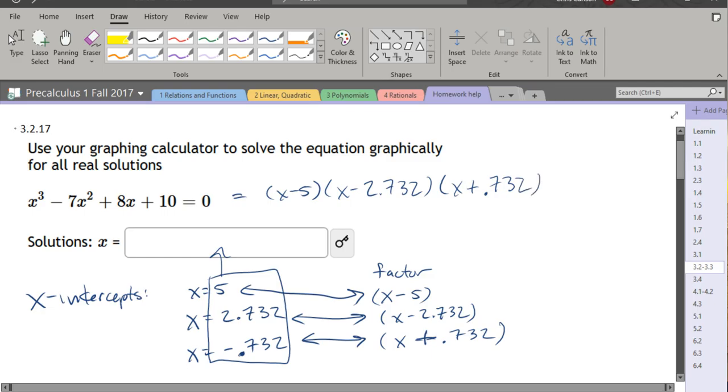So that would be factored form. There's a one, an invisible one in front of the x cubed, and that would mean there's a one in front. Of course you don't need to write the one, but just in case, sometimes there could be maybe a three in front of that as a leading coefficient, and in that case you would have a three in front here.